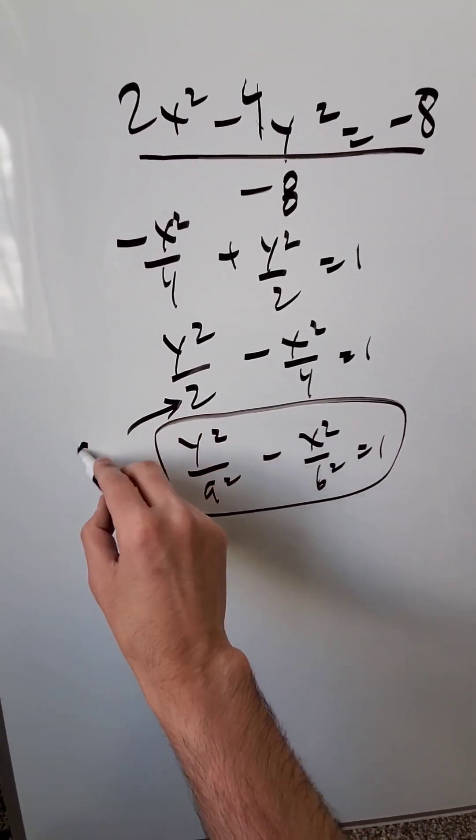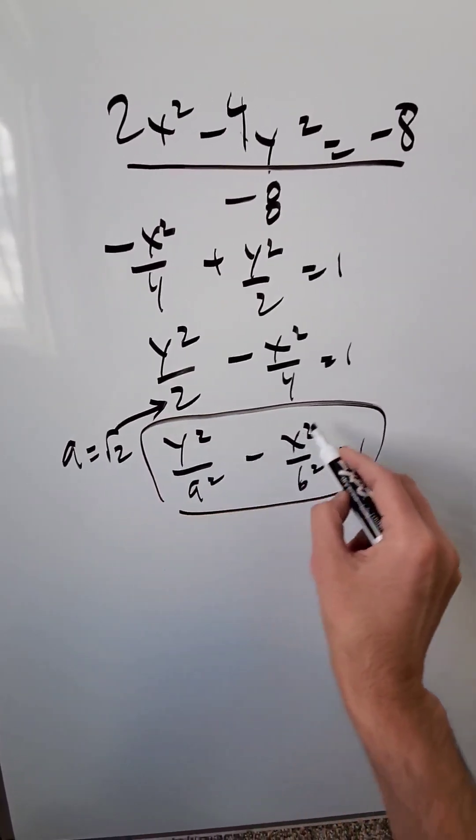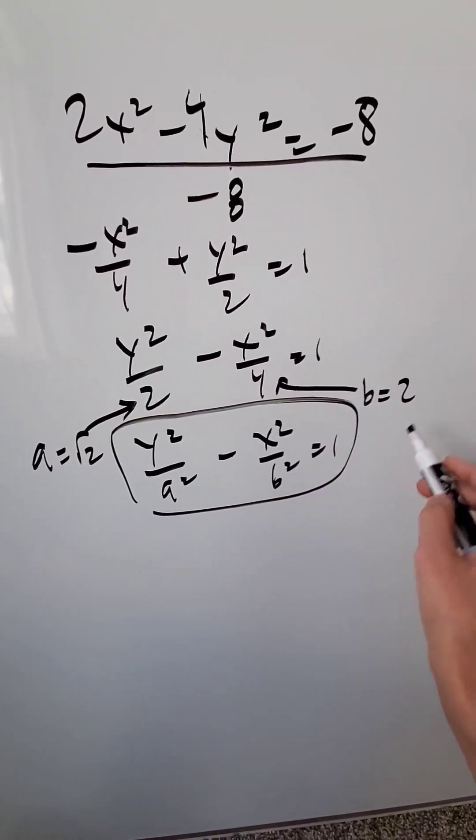You know this here represents a² so therefore a must be root of that, √2. This here is b² so b must be root of that which is 2.